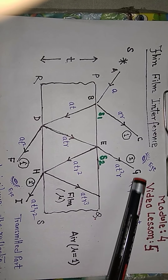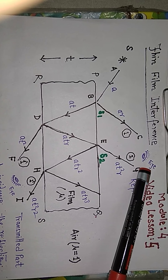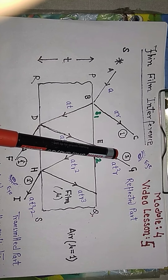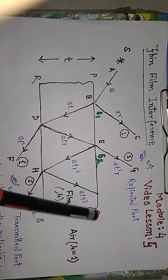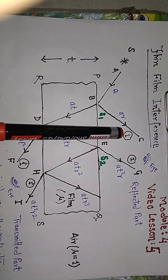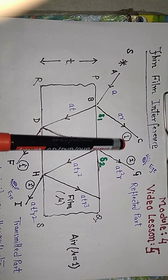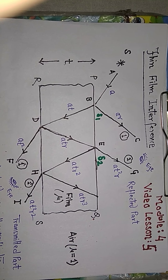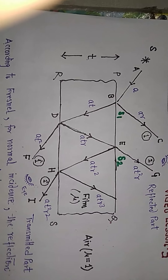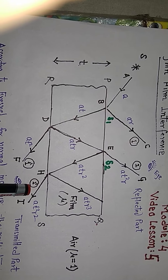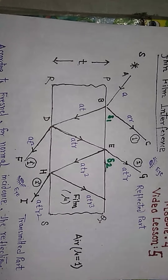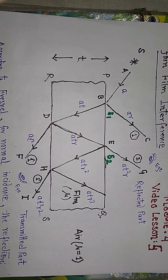If an observer is watching from above, we have taken just two rays — ray 1 and ray 2 — but we can extend this further. When we look at ray 1 and ray 2, they will fulfill all the conditions of interference. Similarly, if we look from below, we get ray 1-dash and ray 2-dash, which also fulfill all conditions of interference.